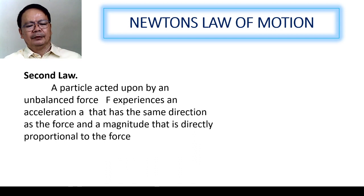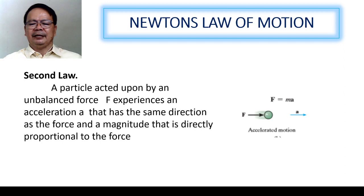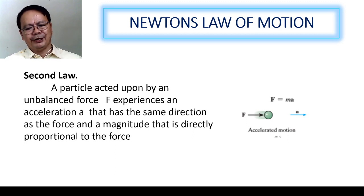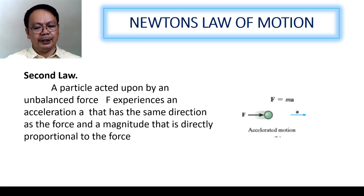The second law states that a particle acted upon by an unbalanced force experiences an acceleration that has the same direction as the force and a magnitude that is directly proportional to the force. To have an explanation, let us imagine that we have here a body that is subjected to an unbalanced force F. Then this body will have an acceleration which is directed in the same direction as that of F and whose magnitude is directly proportional to that F. Meaning, if F is greater, then acceleration would be greater. If F is smaller, then acceleration would be smaller. That is what we mean by the second law of motion.